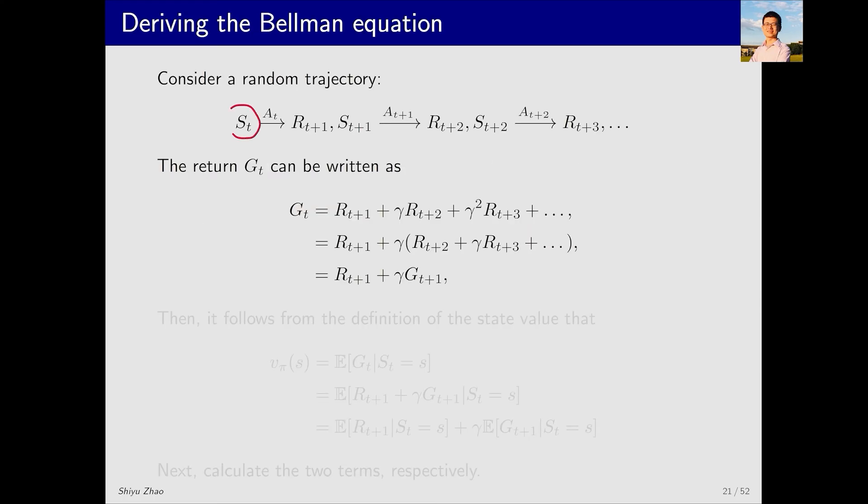First, starting from st and taking action at leads to this specific trajectory. We can calculate its discounted return, gt, a concept we have already discussed. What's new here? We divide gt into two parts. Extracting the discount factor gamma and reorganizing the part inside the parentheses leads to gt plus one. Therefore, the return obtained at time t equals the immediate reward plus the return that will be obtained starting from the next moment, adjusted by the discount rate.